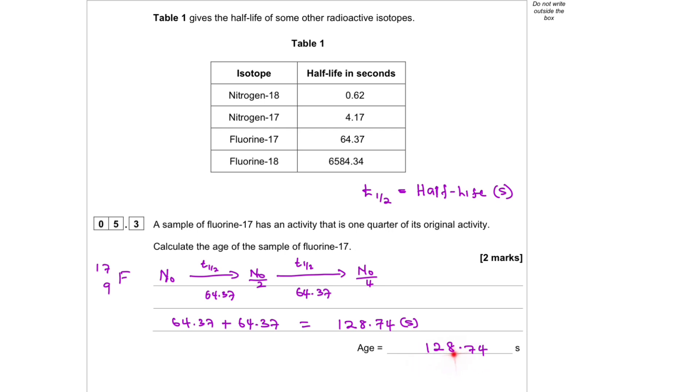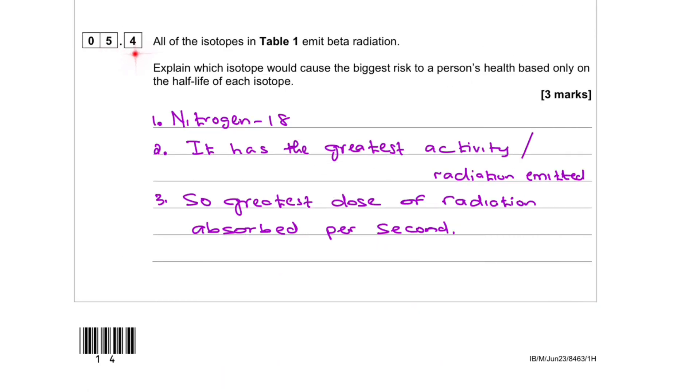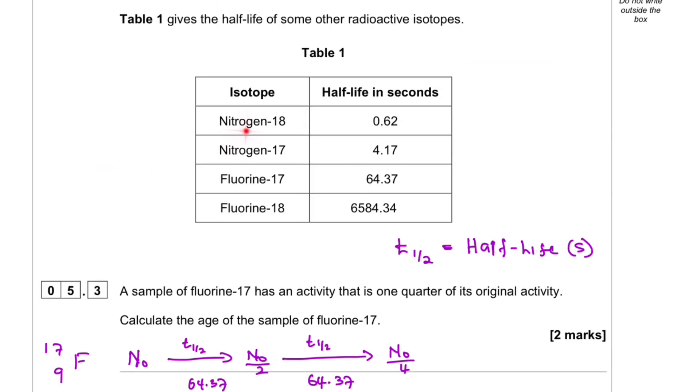Question 5.4. All of the isotopes in Table 1 emit beta radiation. Explain which isotopes cause the greatest risk to a person's health based only on the half-life of each isotope. The isotope table. Nitrogen-18 has the shortest, so that means it decreases faster.